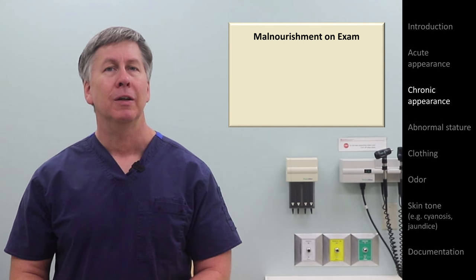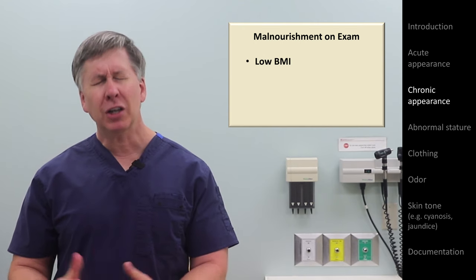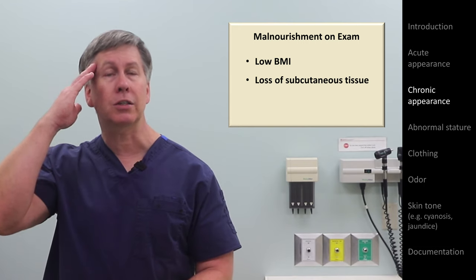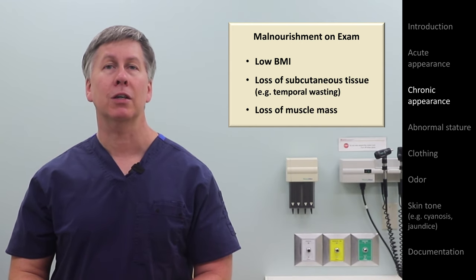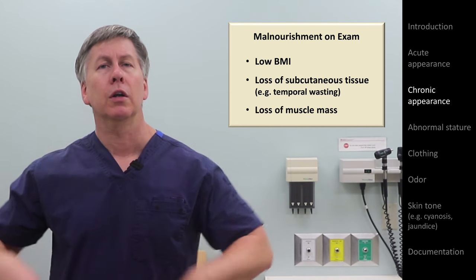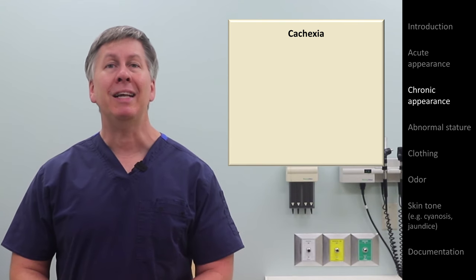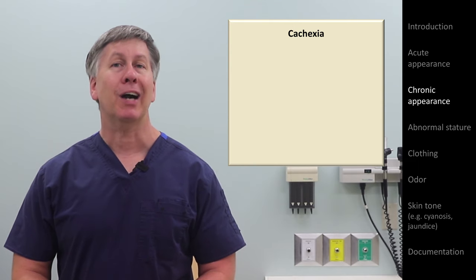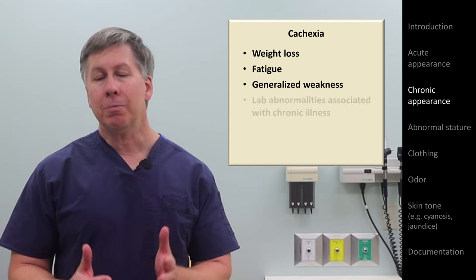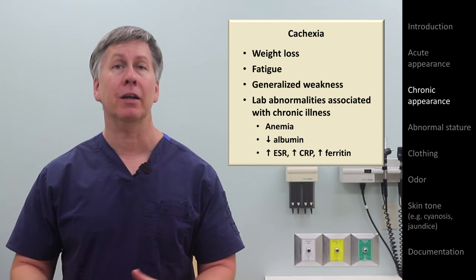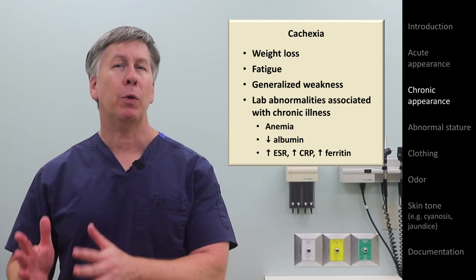Another way to convey chronic illness is by commenting if the patient appears malnourished. It's partly based on BMI, but also whether a patient has loss of subcutaneous tissue in typical locations such as the temples — referred to as temporal wasting — or loss of muscle mass in the back of the hands, deltoids, or hip areas. Clinicians sometimes use the adjective cachectic, but cachexia as a medical term means something more specific: the combination of weight loss, fatigue, generalized muscle weakness, and abnormal labs such as anemia, low albumin, and increased inflammatory markers — a systemic metabolic derangement not synonymous with malnourishment.